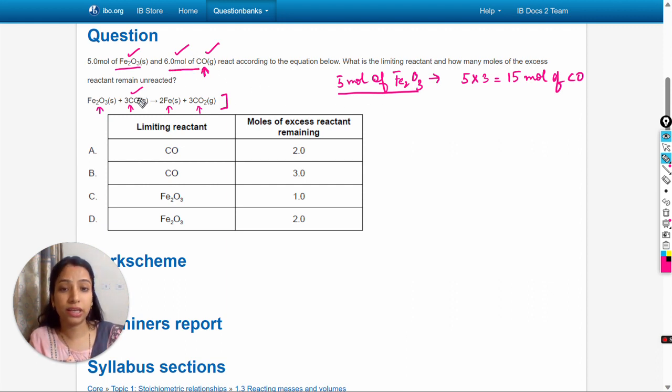...then they react with 1 by 3 times Fe2O3. So if 6 moles are there, then they will react 6 divided by 3, which is 2 moles of Fe2O3. But here are present 5 moles, so it is in the excess amount. So Fe2O3 is the excess reactant and CO is the limiting reactant.